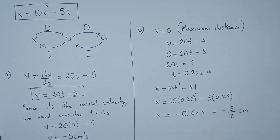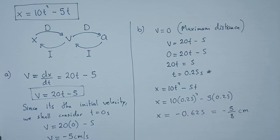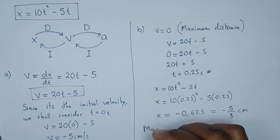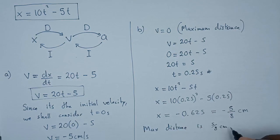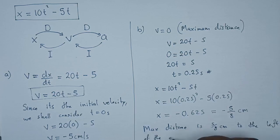We know that distance cannot be negative because distance is a scalar. The negative simply means the maximum distance to the left is at position negative 5 over 8. The negative sign indicates the direction. So we can state that to the left-hand side of the origin, or use the modulus to get a positive 5 over 8. Therefore, the maximum distance is 5 over 8 centimeters to the left of the origin.